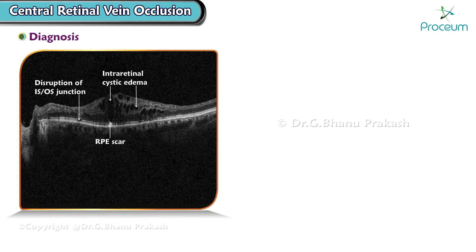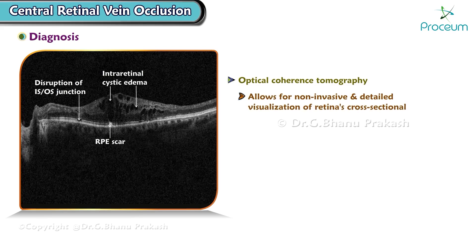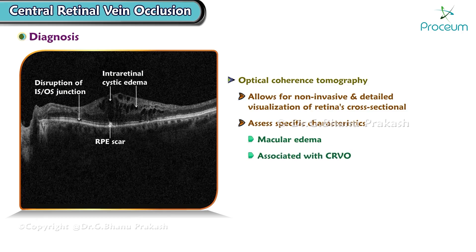Diagnosing central retinal vein occlusion involves various techniques, one of which is optical coherence tomography. This imaging method allows for non-invasive and detailed visualization of the retina's cross-sectional images. It can assess specific characteristics such as macular edema and structural changes associated with central retinal vein occlusion.